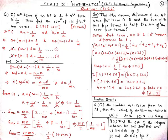Hello and welcome, you all. Today in this video we will be doing some more questions based on arithmetic progression. Our first question for today is: if the mth term of an AP is 1/n and the nth term is 1/m, then find the sum of its first mn terms.